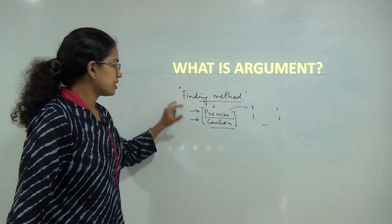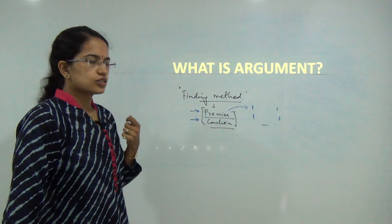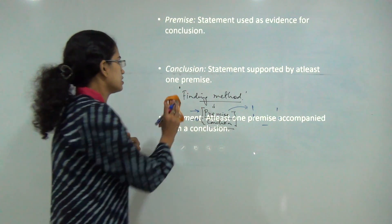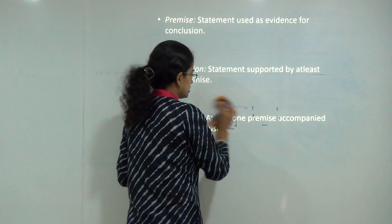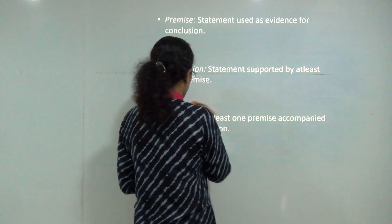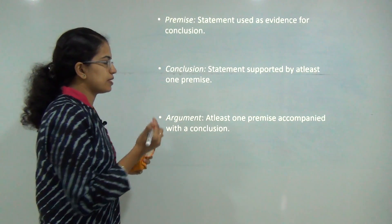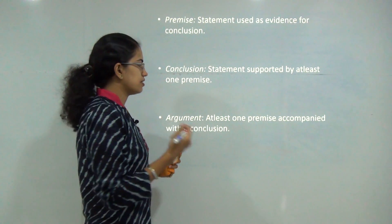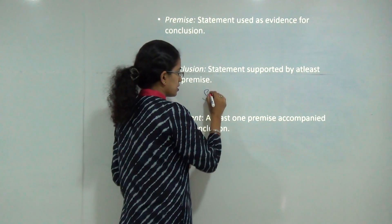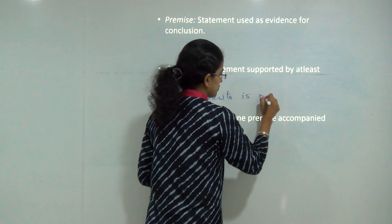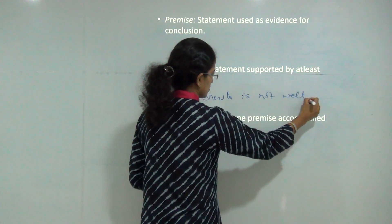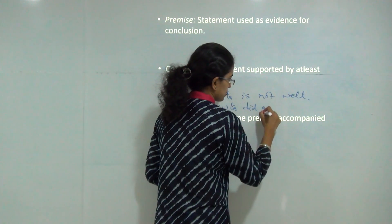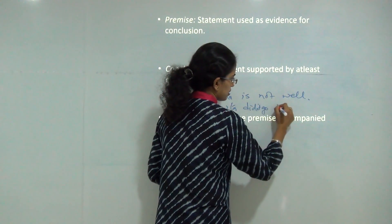Before we begin with finding the method to analyze whether it is a premise or a conclusion, let's first start with the basic meaning of all three words. So premise — whenever I say premise, I am providing an evidence to the conclusion. For example, if I say Shweta is not well, Shweta did not go to school.